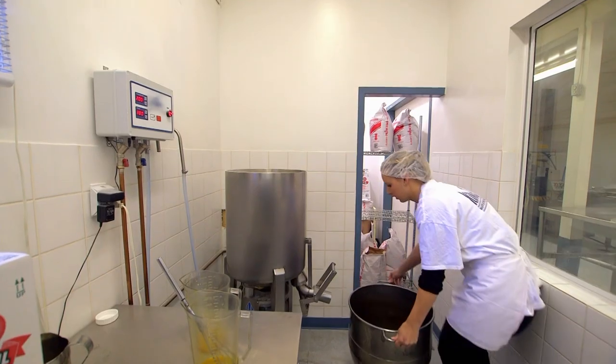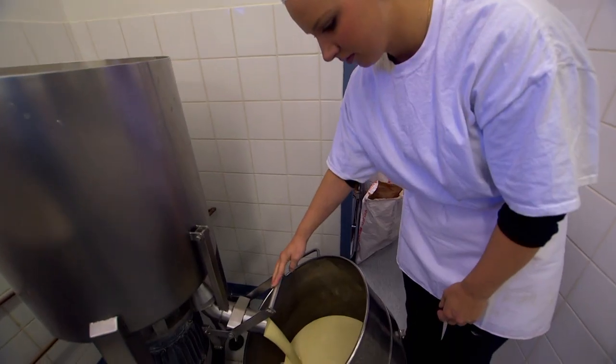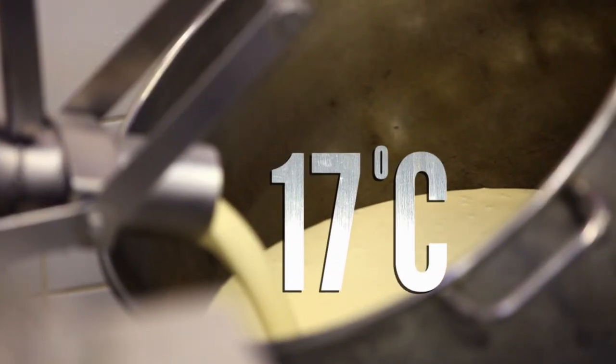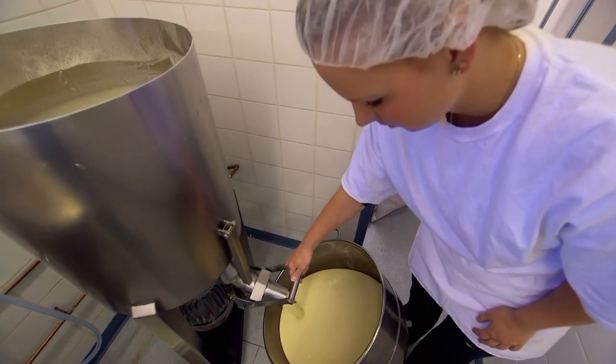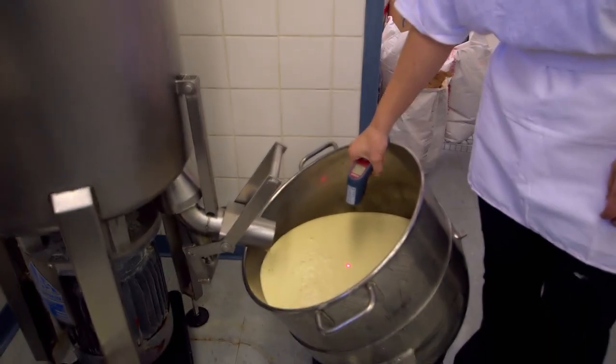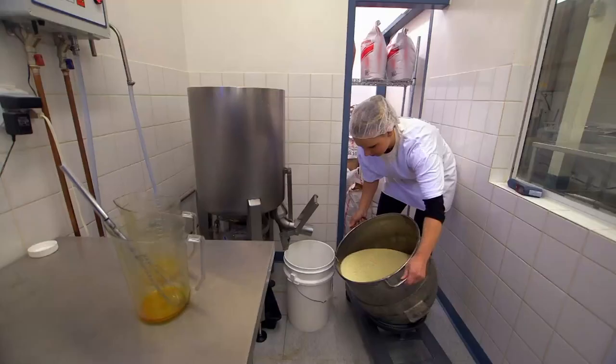Batter making isn't as easy as it looks. Each batch has to be exactly 17 degrees Celsius or the cones will be inconsistent. In the summertime, the flour will be a lot warmer. We have to cool the batter down with the water to even out the temperature.